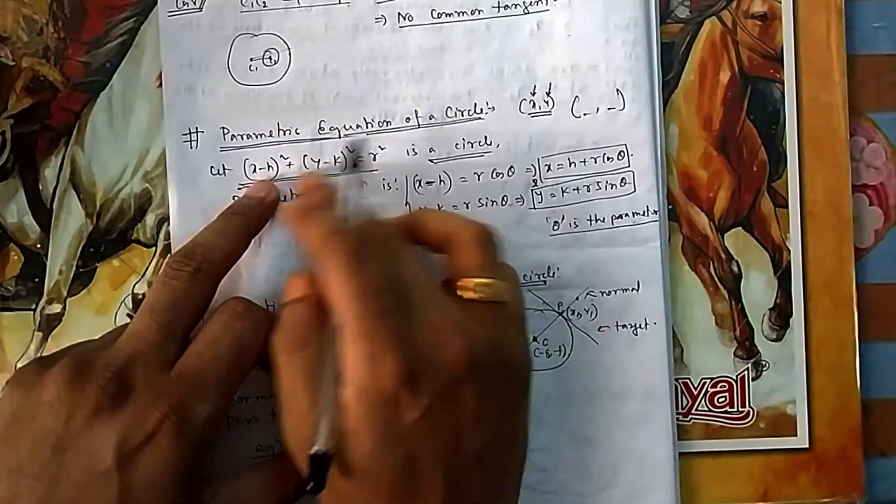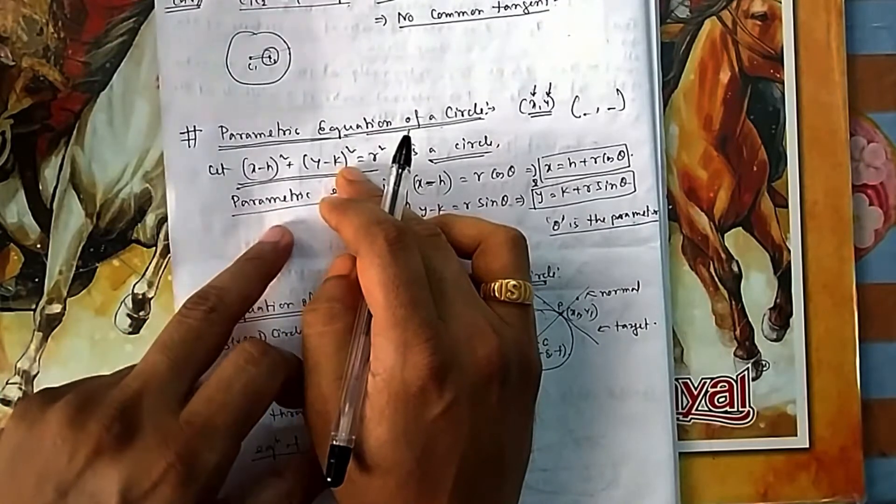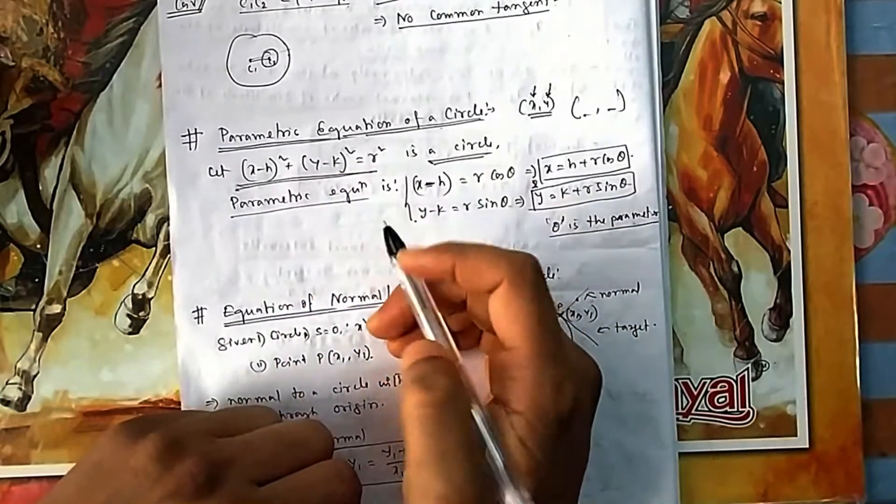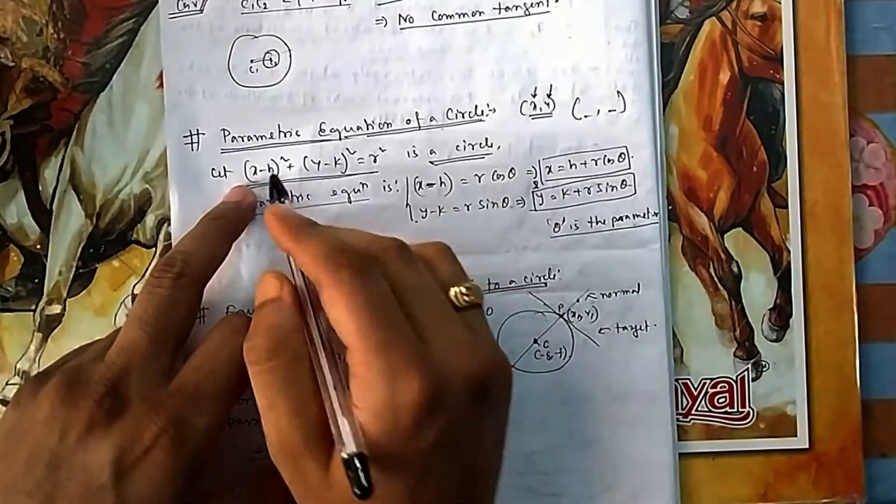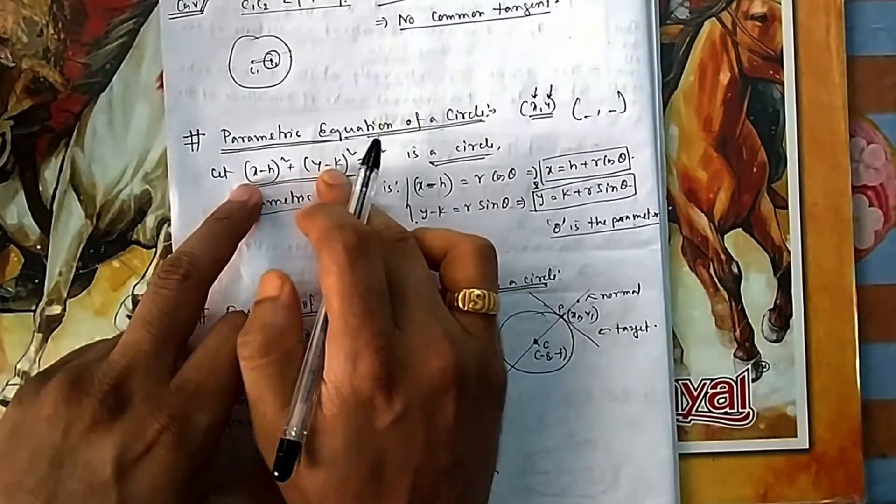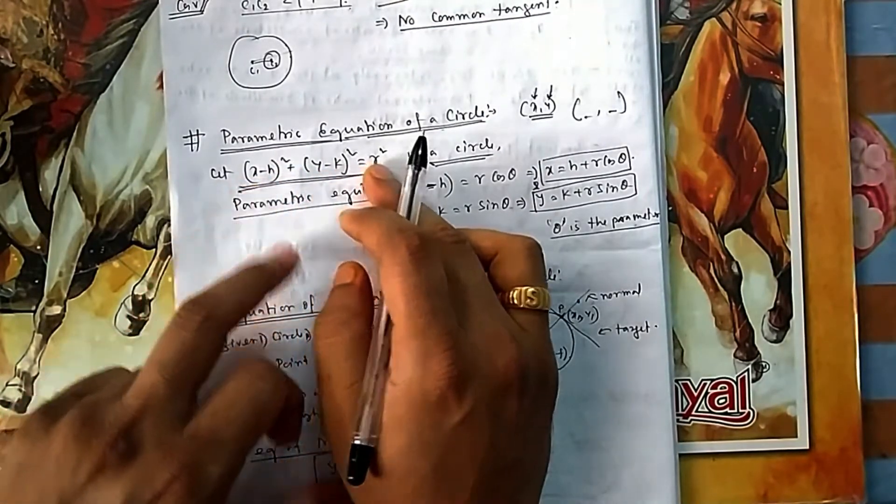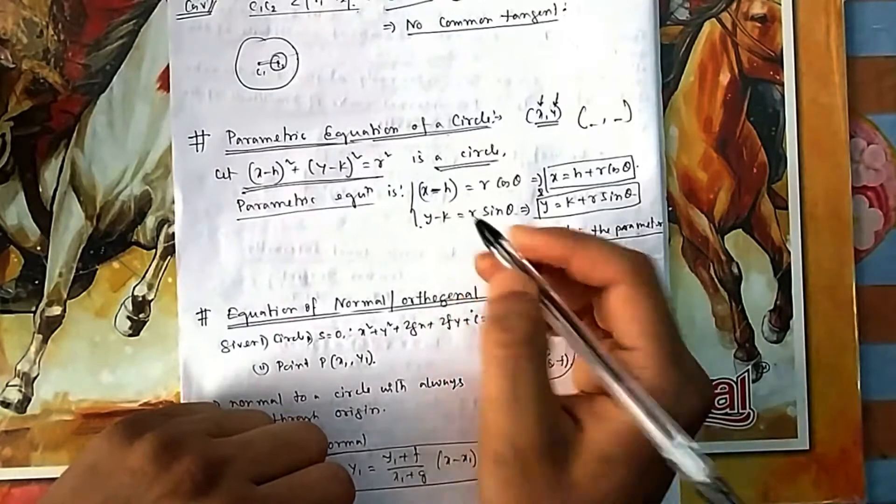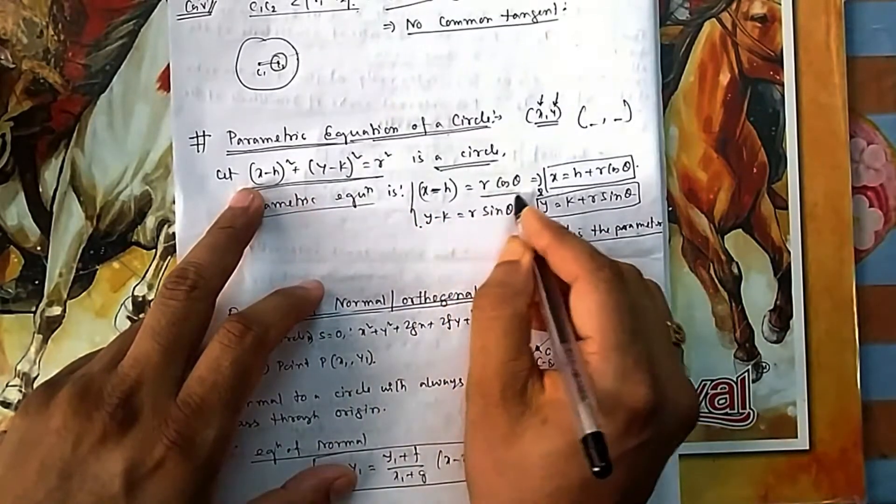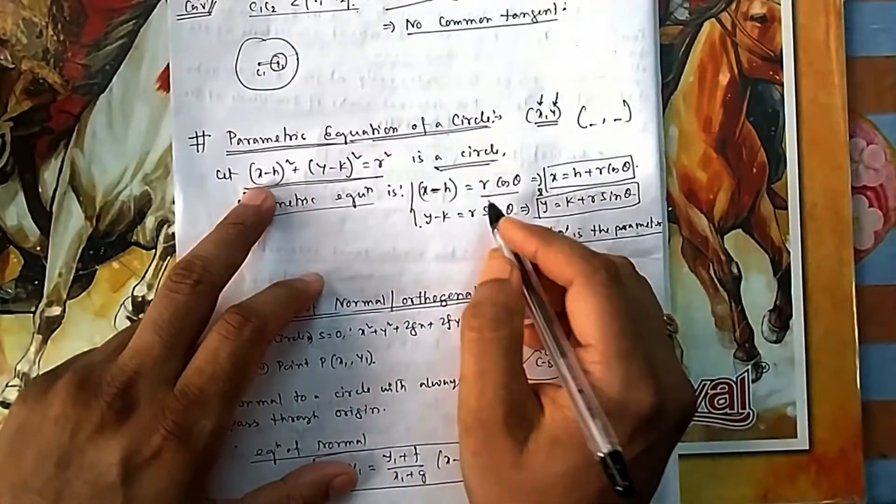Because it is something square plus something square equal to something, it's better to go with trigonometry. If I consider x - h = r cos θ, then it will be r² cos² θ. And y - k = r sin θ gives r² sin² θ. Adding them: r² cos² θ + r² sin² θ = r².